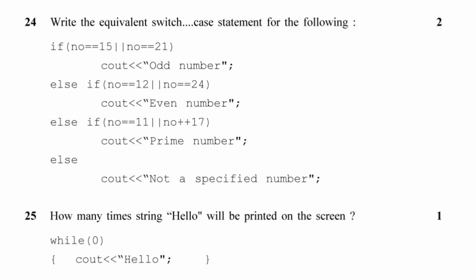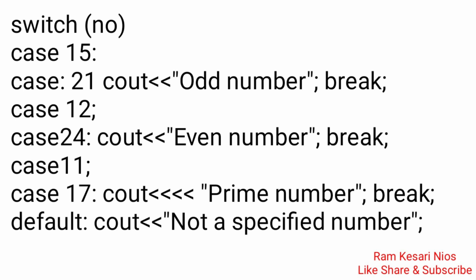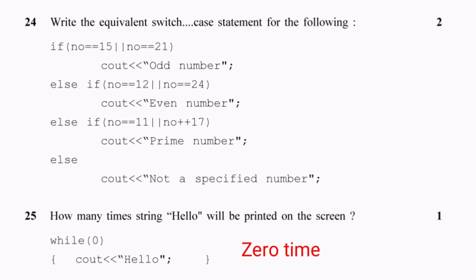Question 24: Write the equivalent switch-case statement for: if(number==15 || number==21) cout << "odd number"; else if(number==12 || number==24) cout << "even number"; else if(number==11 || number==17) cout << "prime number"; else cout << "not a specified number". Switch equivalent: switch(number) { case 15: case 21: cout << "odd number"; break; case 12: case 24: cout << "even number"; break; case 11: case 17: cout << "prime number"; break; default: cout << "not specified number"; }